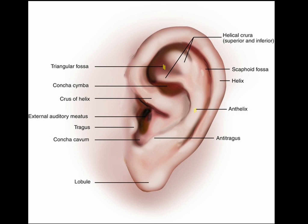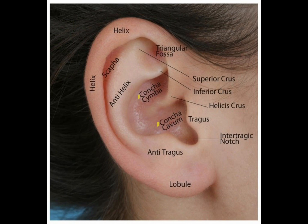The inferior and superior antihelix crura bifurcate off the lower antihelix crus. Then we have the triangular fossa — a triangular depression bordered by the superior and inferior antihelix crura. Next, we locate the conchas. The cavum concha is the interior portion of the auricle that has a concave surface; it is separated from the cymba concha by the crus of the helix and lies inferior to it. The cymba concha is the interior portion of the auricle below the inferior antihelix crus, lying superior to the cavum concha, with the crus of the helix dividing them.